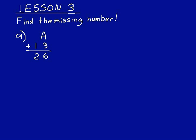We have our result, or our sum, and we have one of the addends, but we don't know what the other addend is. Let's think about our fact families — how could we figure out what A was? A plus 13 has to equal 26. Maybe you can do this in your head and know that 13 plus 13 equals 26. But if not, you would think: if I subtracted 13 from 26, that would give me A. So let's do that: 26 minus 13. 6 minus 3 is 3, 2 minus 1 is 1, so A equals 13.